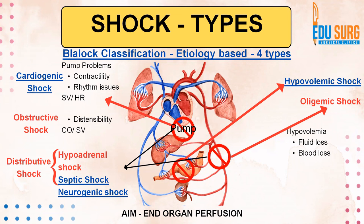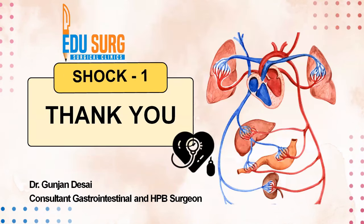An elaborate classification has been developed — this slide gives you the concepts: obstructive shock and distributive shock, which basically involves vasodilatation and can be due to adrenal crisis or sepsis. Neurogenic shock is not considered a distributive shock because the findings are very different. In the next part of this discussion, we will study how to identify the various types of shock and their causes. I hope this series helps all of us in understanding and remembering the concepts of shock for life, because this is a very important topic that needs to be a reflex when managing these patients. Thank you.